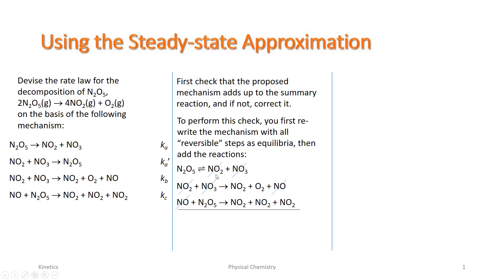After cancellation — getting rid of common species from reactant and product sides — we're left with two N2O5s on the reactant side and four NO2s and one O2, which is in fact our summary reaction. So at least this mechanism is consistent with the summary reaction.